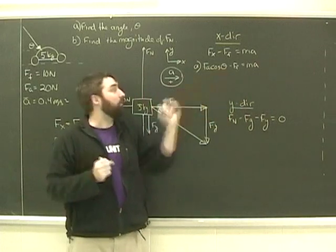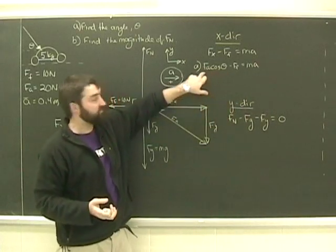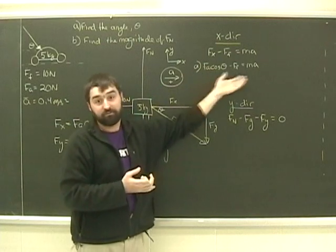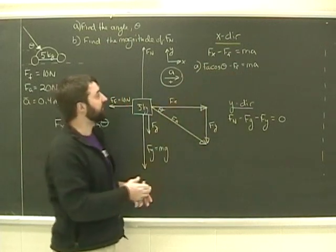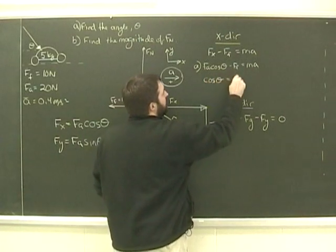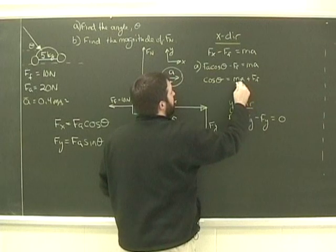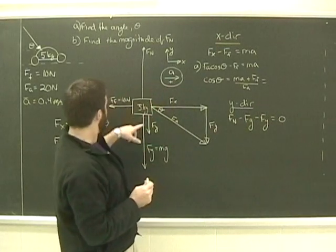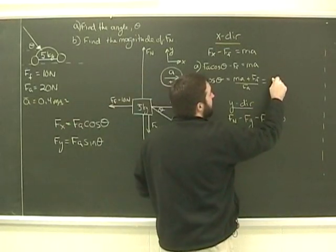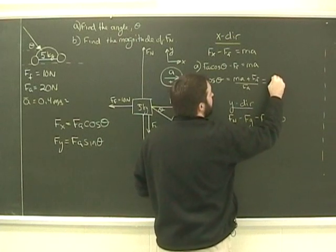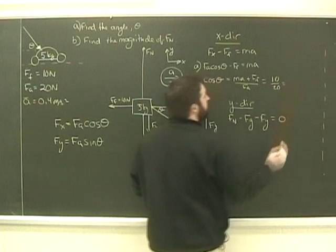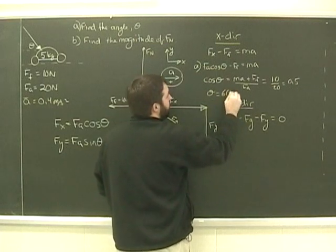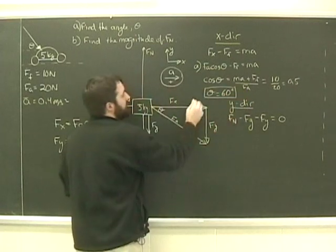Now, in this question, I don't know theta, and I want to find it. But I could just as easily have told you theta and asked for fa. I could have asked for ff, m, or a. Whatever we've asked you to do, and whatever you're looking for, you should be able to find it in one of these two equations. So in this case, to find theta, cos theta will equal ma plus the force of friction over fa. Do a little more math, and we find that m, 5 times a, 0.4 is 2, plus 10 is 12, over fa, which is 20. 10 over 20 is 0.5. The inverse cosine of 0.5 is 60. So theta equals 60 degrees.